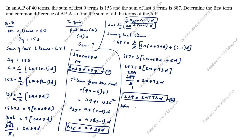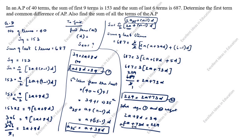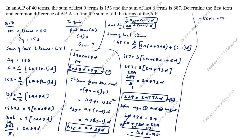Now solving equations 1 and 2: equation 1 is 2a + 8d = 34, equation 2 is 2a + 73d = 229. Subtracting equation 1 from equation 2: 73d − 8d = 229 − 34, so 65d = 195, giving minus 65d = minus 195.